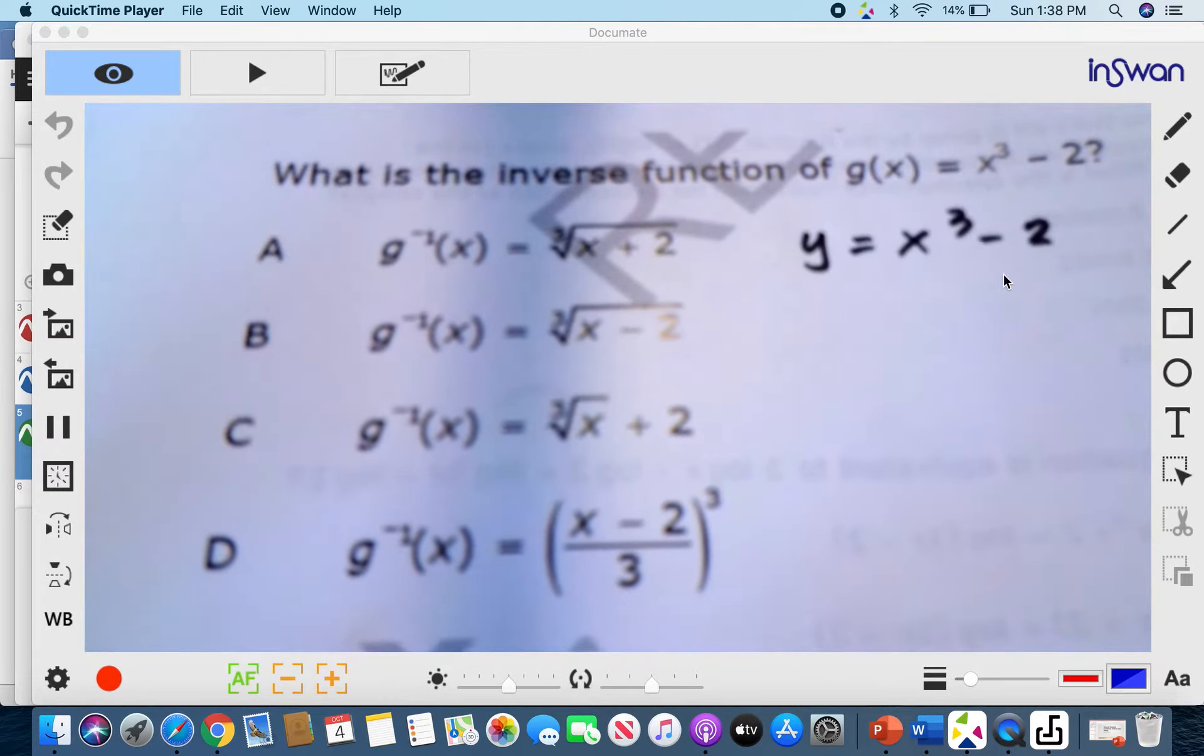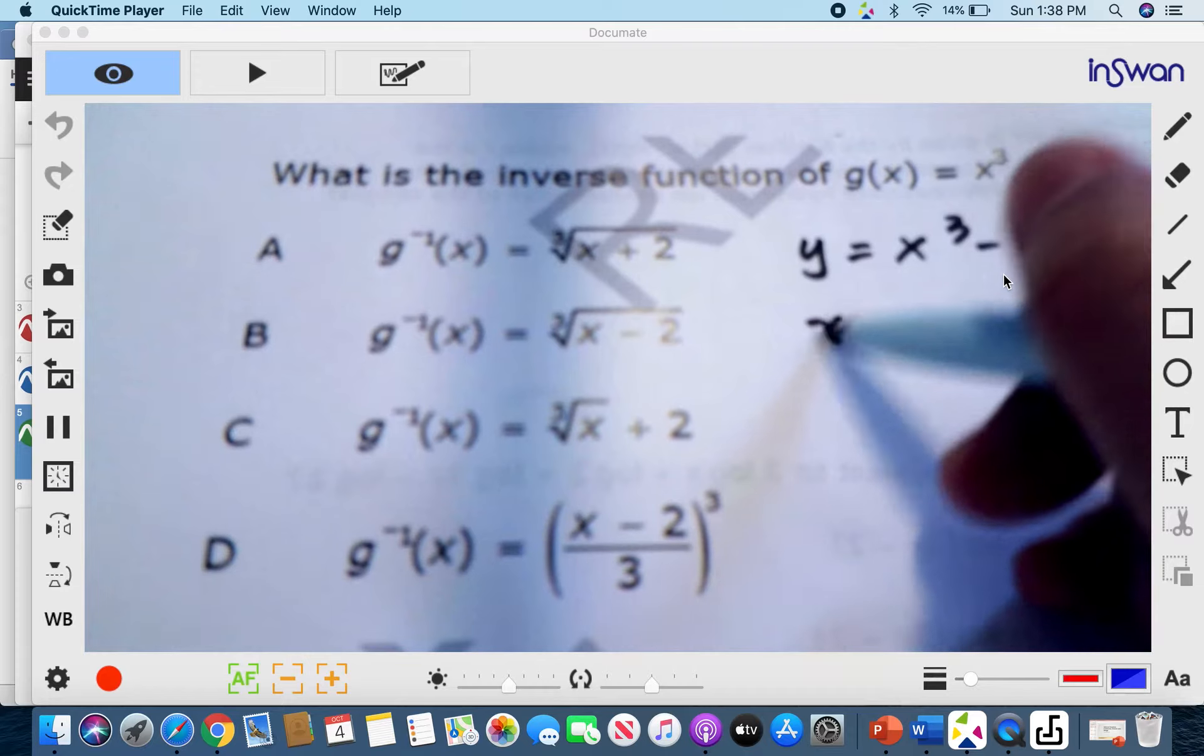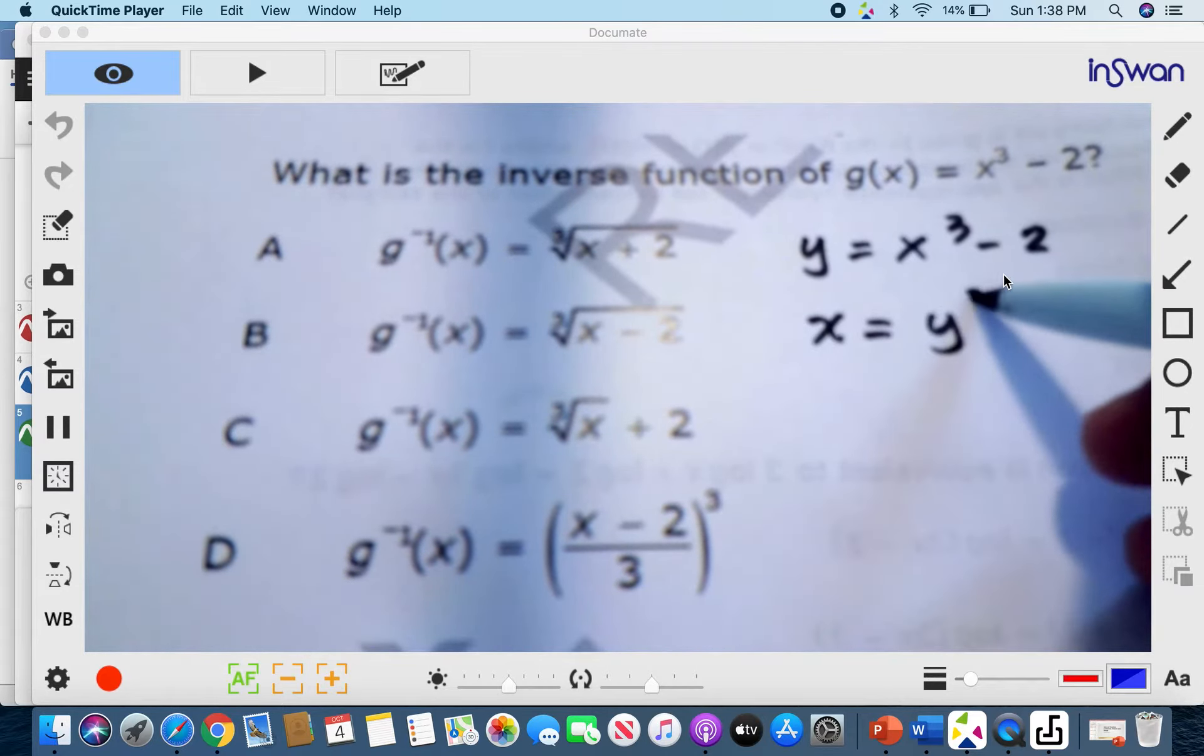Now the second step is to flip your x and y, because we know that the basic definition of an inverse function is just the flip values of x and y between two functions. So now your x becomes y and y becomes x. So this now is x equals y cubed minus 2.